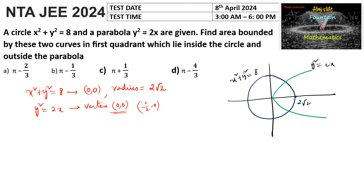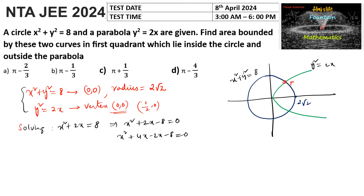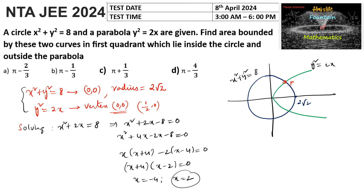Now let us find the point of intersection of both curves. Solving the equations x² + y² = 8 and y² = 2x simultaneously, we substitute to get x² + 2x - 8 = 0, which factors as (x + 4)(x - 2) = 0. So x = -4 or x = 2. Since we require the first quadrant, we take x = 2.